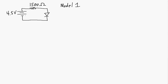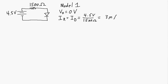Here's a simple circuit with a 4.5-volt source and a 1500-ohm resistor. With Model 1, the diode is forward biased and acts like a short. The voltage across the diode is 0 volts, so 4.5 volts is applied across the 1500-ohm resistor. Using Ohm's law, the current through the resistor — and through the diode, since it's a series circuit — is 3 milliamps.